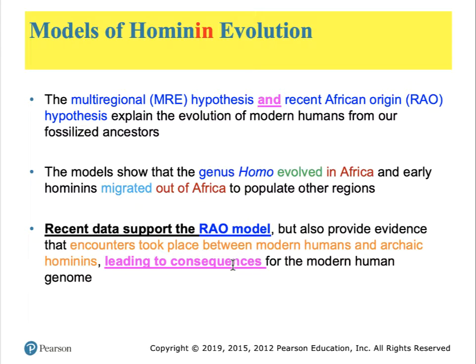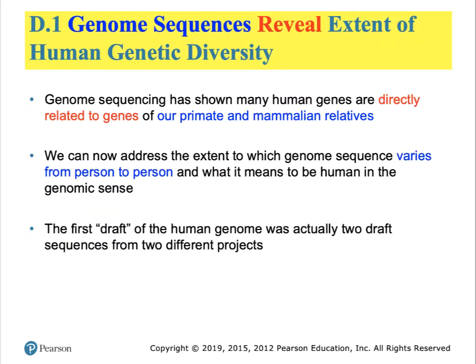The consequence of those encounters is that most of us are up to four percent Neanderthal. Believe it or not, most of this information is coming not from fossil data but from actual DNA data. Our technology has enabled us to sequence human DNA as well as DNA from the remains of our cousins the Neanderthals and many other hominin cousins.